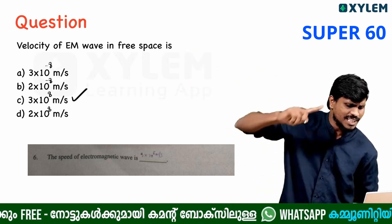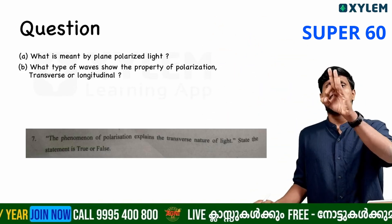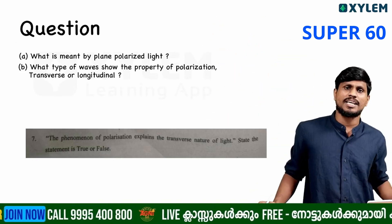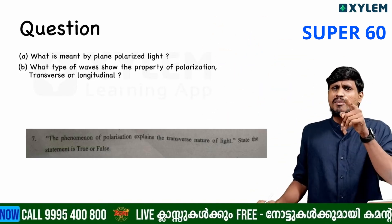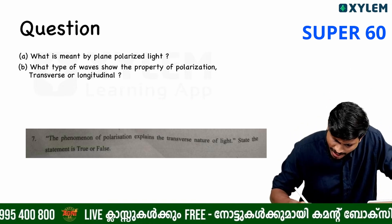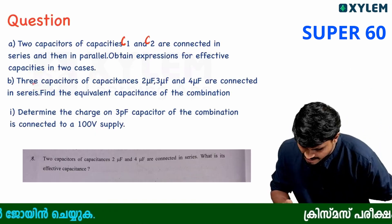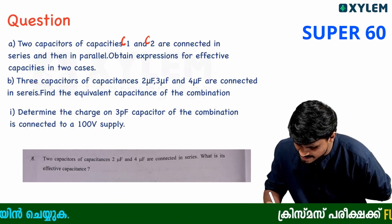Option C is the right answer. It is also a longitude. Polarization. We have another wave — the transverse waves have three capacities of capacitors.